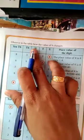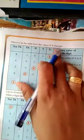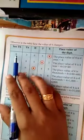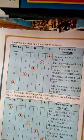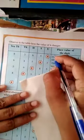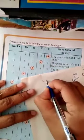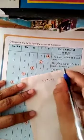Observe in the table how the value of 4 changes. First number 83654, we have to find the place value of 4. What's the place value of 4? 4 is in unit place, therefore its place value is 4 into 1, which equals 4.